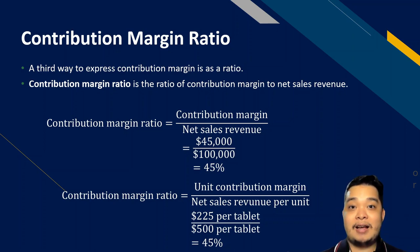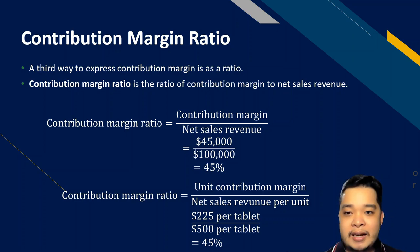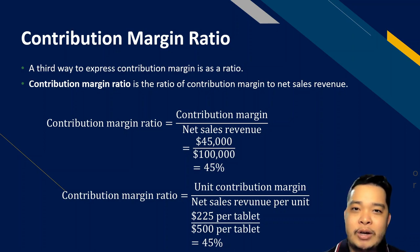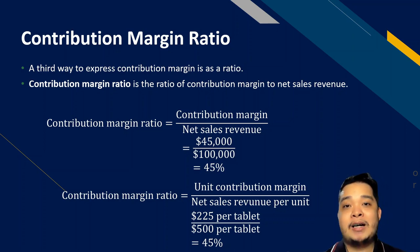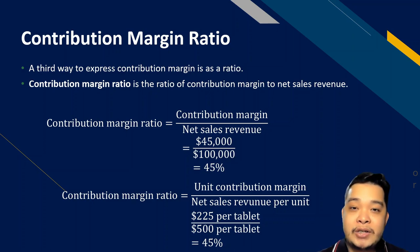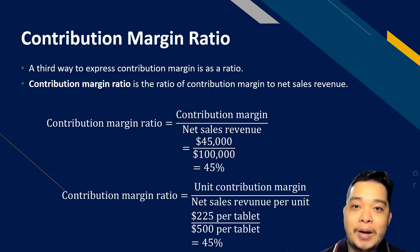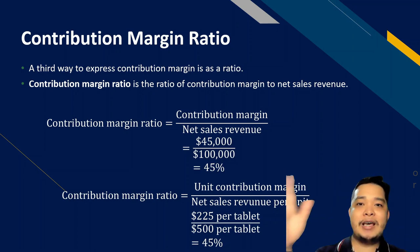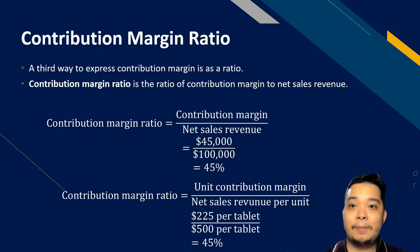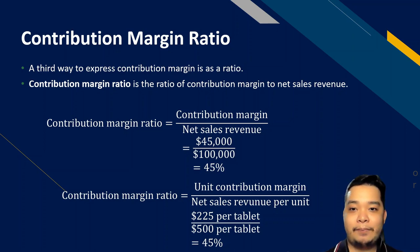Another interpretation: 100% minus the contribution margin ratio gives you the variable cost ratio. In this case, 100% less 45% equals 55%, meaning 55% of every peso sold goes to pay variable costs, and the remaining 45% is the contribution margin used to pay fixed costs. These are all the same concepts expressed in different ways, all from the same accounting information.